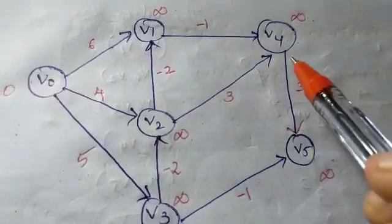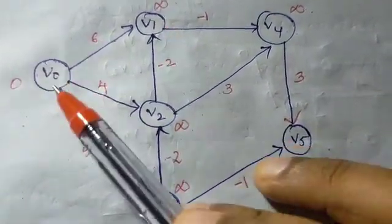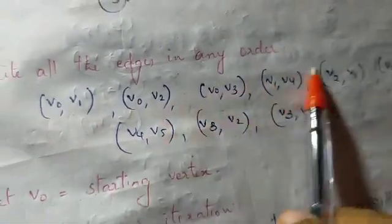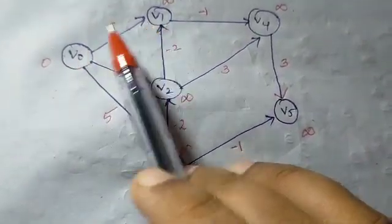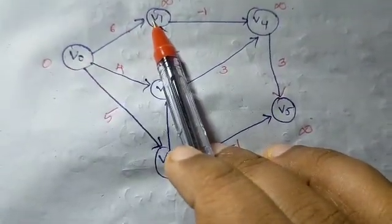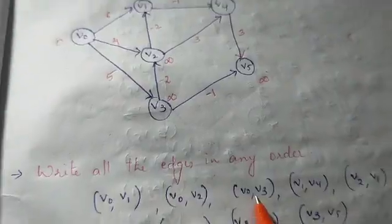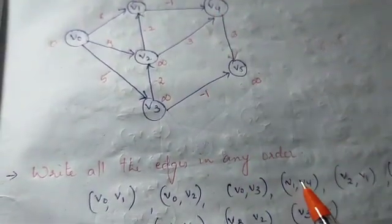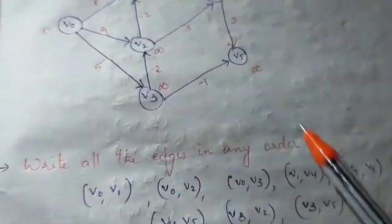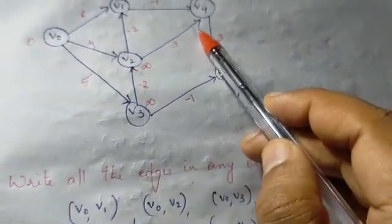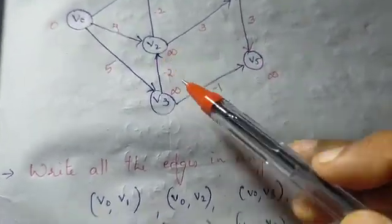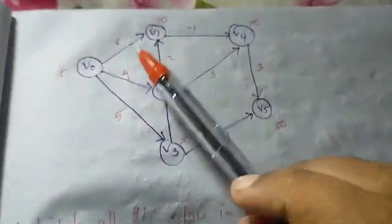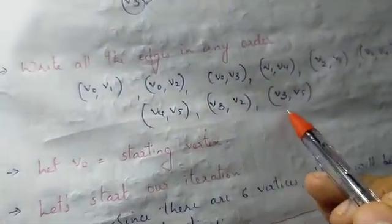The edges in the graph are: V0→V1, V0→V2, V0→V3, V1→V4, V2→V1, V2→V4, V4→V5, V3→V2, and V3→V5. These are directed edges — for example, V0→V1 does not mean V1→V0.